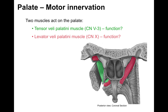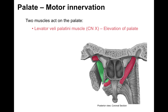The real clinically relevant one is the levator veli palatini, innervated by cranial nerve 10, and that elevates the palate. So there we've got levator veli palatini, innervated by cranial nerve 10, and when the muscle contracts, it lifts the palate up.